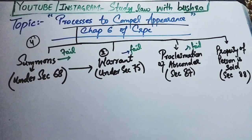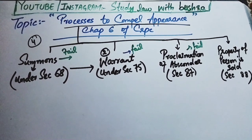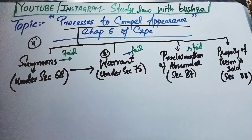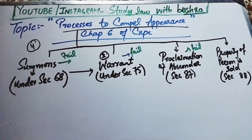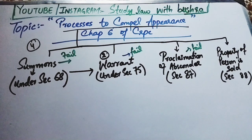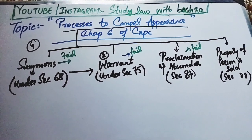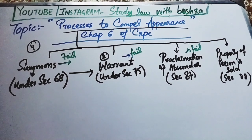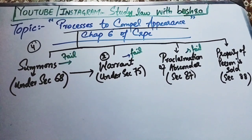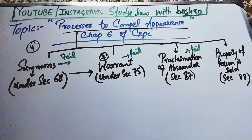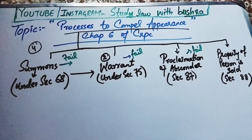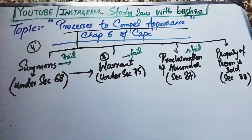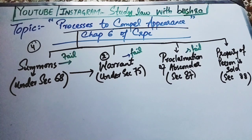This 'Process to Compel Appearances' deals with four things. If a person has to appear in court, firstly a summon will be issued under Section 68. If he fails to appear in court despite the summon, we move to the second process — a warrant of arrest under Section 75. If that also fails, the third process is proclamation of absconder under Section 87. If appearance still does not occur, the property of that person is sold under Section 88.